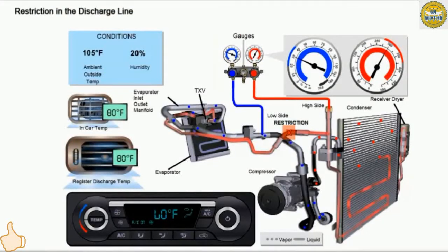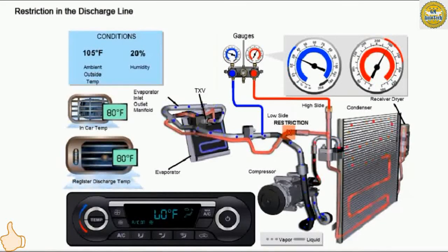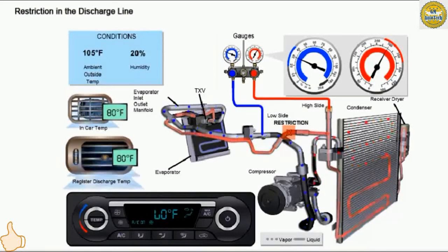When a restriction is in the liquid and discharge line between the condenser and high-pressure service port, high side pressure will be high, and the low side pressure will be normal to low. When ambient temperature is 27 degrees Celsius (80 degrees Fahrenheit) and relative humidity is between 30 and 60%, the high side pressure will read between approximately 40 PSI and 10 PSI. When ambient temperature is 41 degrees Celsius (105 degrees Fahrenheit) and relative humidity is between 10 and 40%, the high side pressure will read above approximately 255 PSI, and low side pressure will read between approximately 40 PSI and 20 PSI.